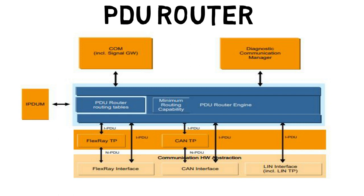The router can be split into two parts: the PDU router with a PDU routing table, and the PDU router engine. In BSW configuration, the PDU routing table will be configured.